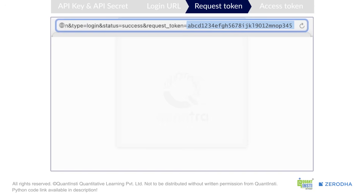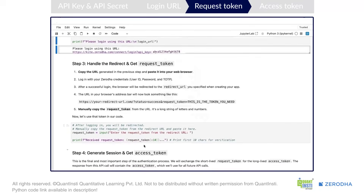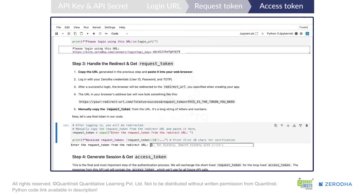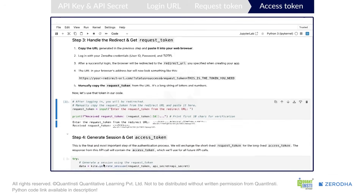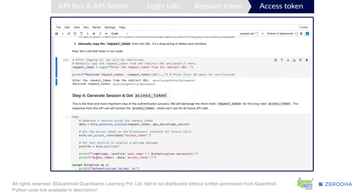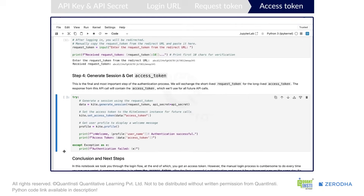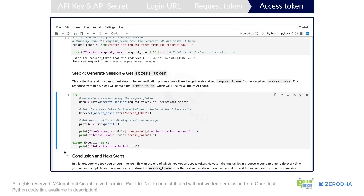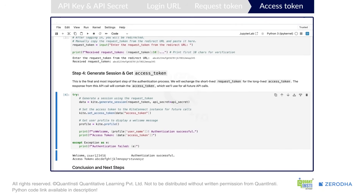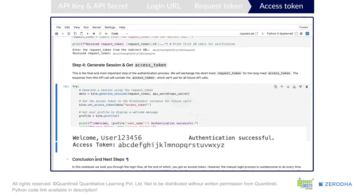You can copy the request token from the URL and come back to the notebook. Here, you will use this request token and API secret to get an access token. This access token works for the entire day, meaning you can make multiple requests in a day using the same access token. But for the next day, you have to follow these steps again to generate the access token.